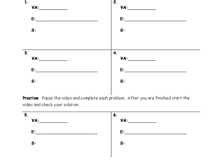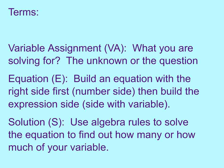Let's take a look at the terms. First, variable assignment — let's give that the initials VA. It's what you're solving for. It's the question, the unknown of the word problem. Usually that's found with the question mark in the problem, towards the end of the word problem.